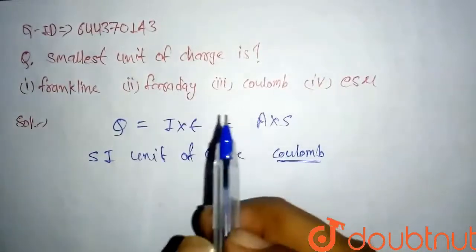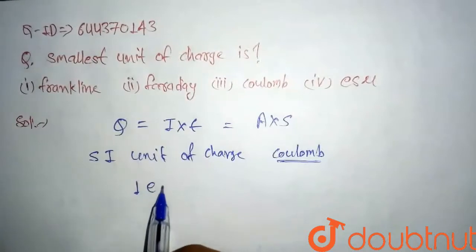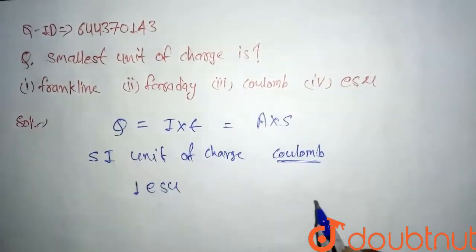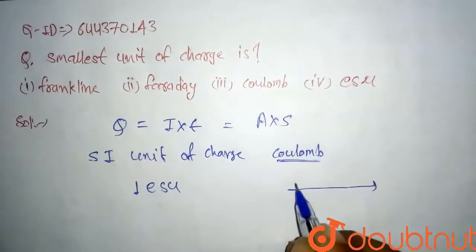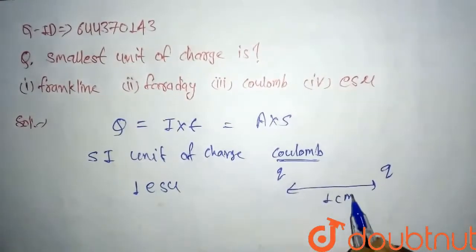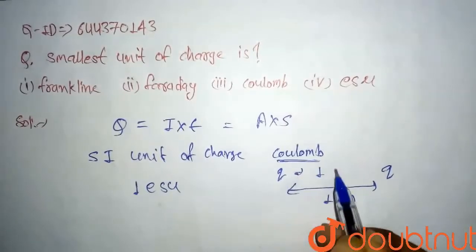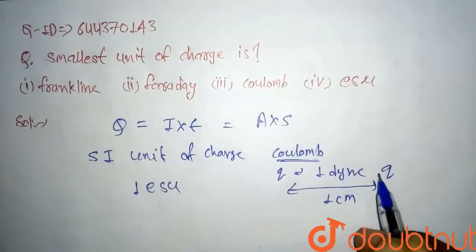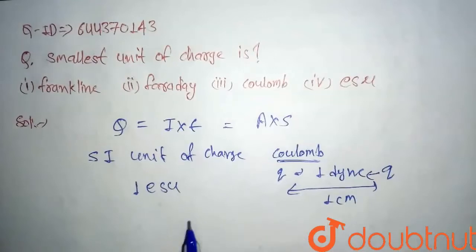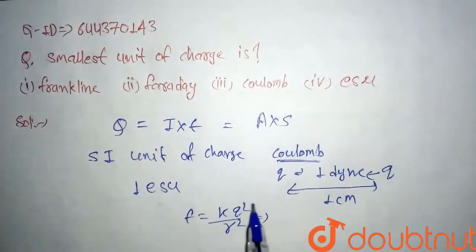So the smallest unit of charge is ESU. Here what is the meaning of ESU? When two charges are placed at a distance of one centimeter apart and the force between two charges is given by one dyne, then the unit of charge here comes out one ESU.